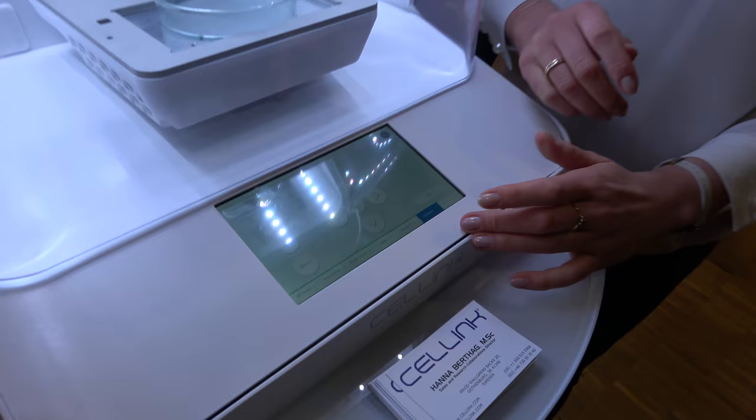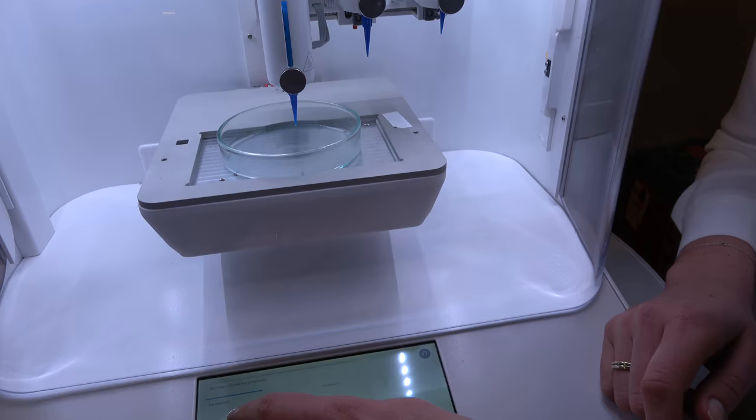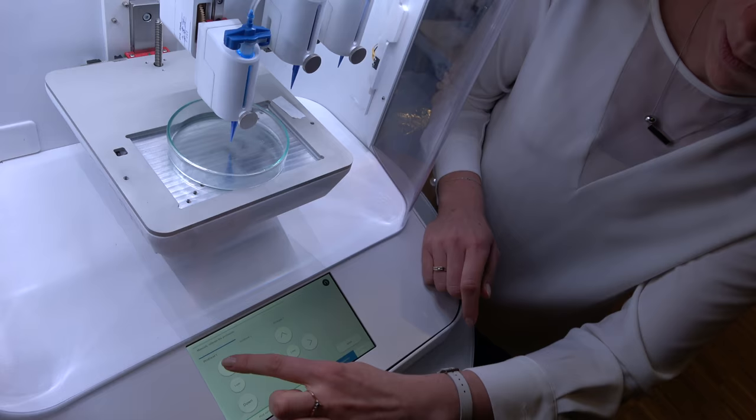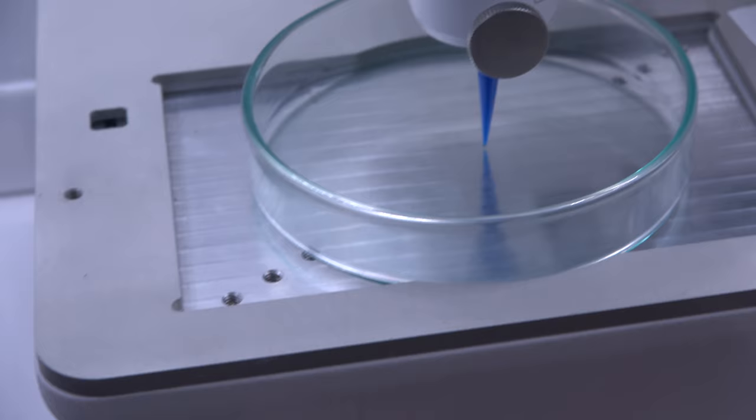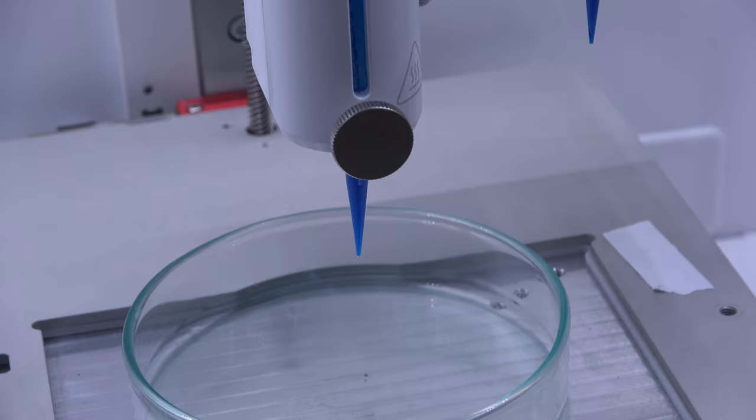So here you can then choose to set the point zero, basically. And then you can choose the step size. We have 10 millimeters, 1 millimeter, and 0.1 millimeter. So then you want to be as close to the surface as you can without touching it. And then you will apply. And then you're ready to bio print.